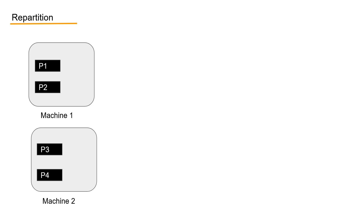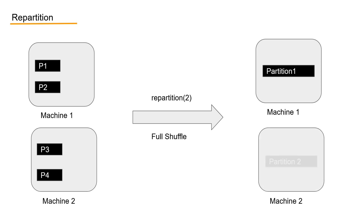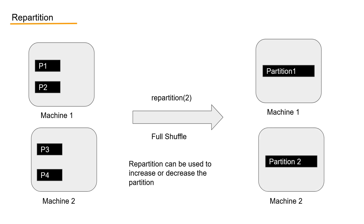Let's say you have a dataset on two machines with four partitions, and if I want to repartition it to have two partitions, in repartition, Spark will perform a shuffle and will try to create two partitions with almost similar size. In this process, a shuffle will be involved, which means a network overhead will be involved in repartition.